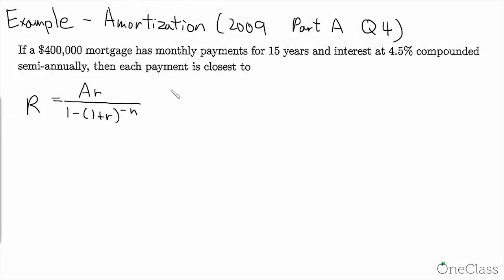Now we will talk about the first example of amortization. This is taken from 2009, Part A, Question 4. If a $400,000 mortgage has monthly payments for 15 years and interest at 4.5% compounded semi-annually, then each payment is closest to, and the relevant equation will be used is the periodic payment equation.